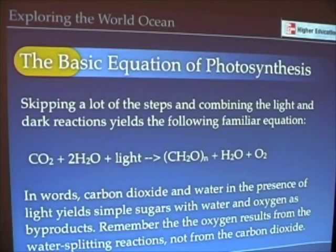If we just simplify this incredibly, perhaps horrendously, we get the following equation, and this is an equation that you see in your biology book. Carbon dioxide plus water, and we know that water is necessary for the light reactions, plus light makes sugars, and this is the basic backbone formula for sugars, CH2O, N, and water, and oxygen as a byproduct. So carbon dioxide and water in the presence of light go to sugars, and more water, and oxygen. That's the familiar equation of photosynthesis, and that's the one that most of you have learned.